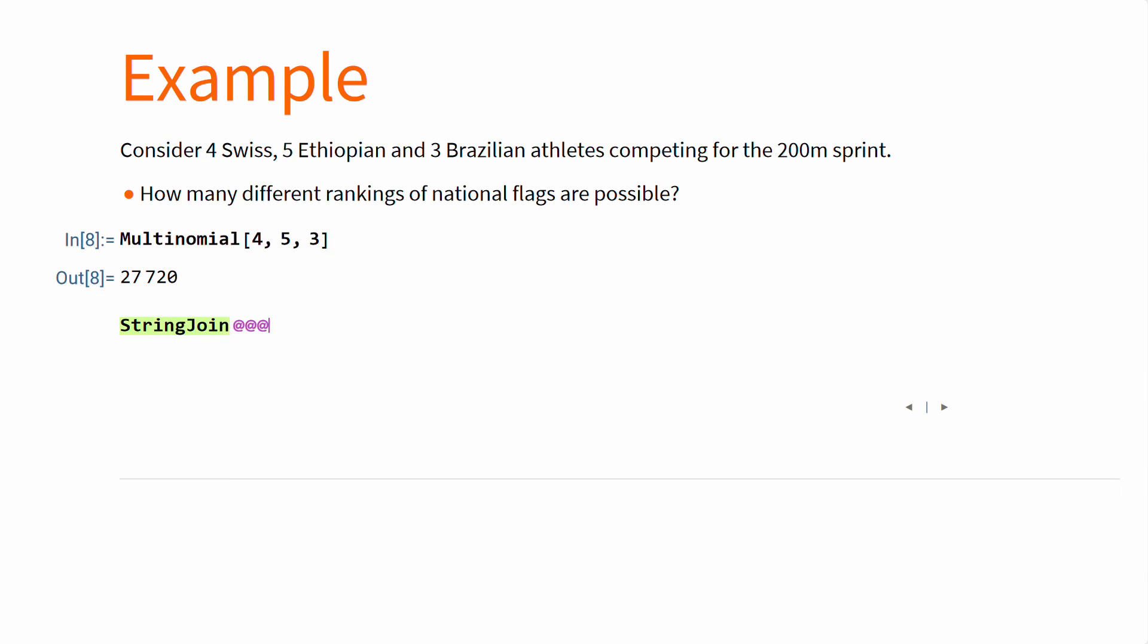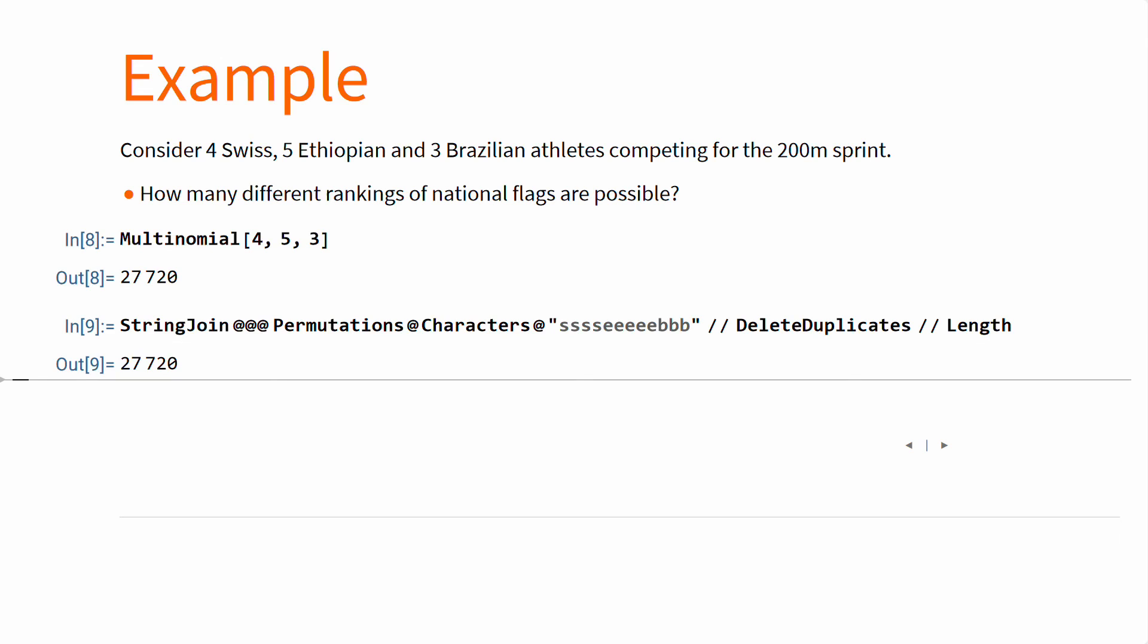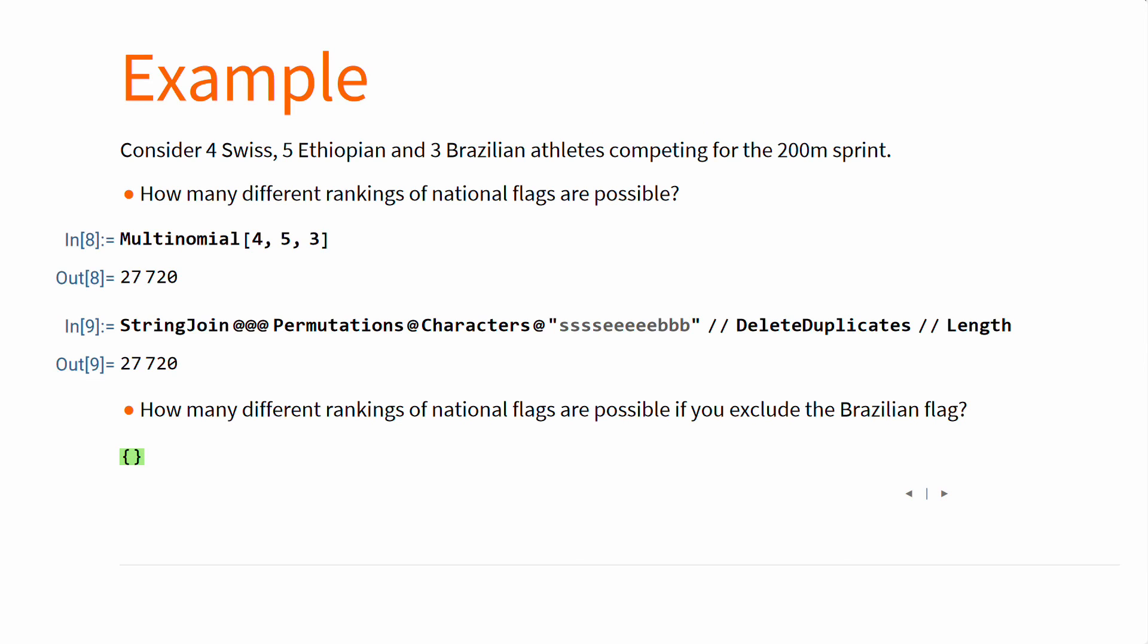You can also see its equivalent in code, where we actually calculate all the different permutations, and we count them. If you count only two groups, that is excluding Brazilians, then you can see the binomial calculation is actually equivalent to its multinomial counterpart.